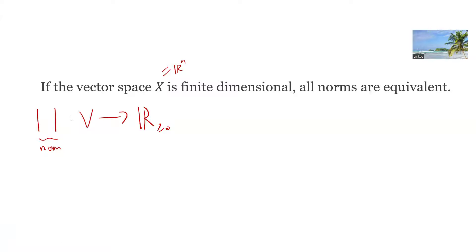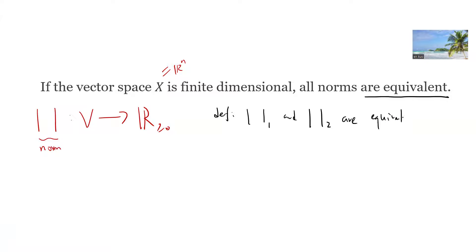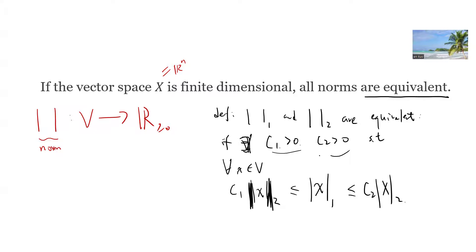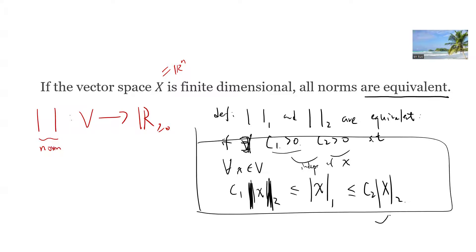So I need to first define what equivalent means. I'll write a definition. If I say that this norm and this norm are equivalent, it means that there exists c1 greater than 0 and c2 greater than 0, such that for any x in this vector space, the first norm is always bounded: c1 times the second norm is less than or equal to the first norm, which is less than or equal to c2 times the second norm. And c1 and c2 are independent of x. So this is the definition of when the first norm and second norm are equivalent.